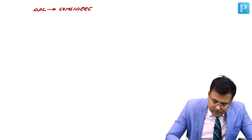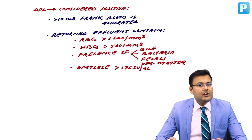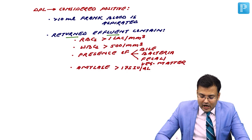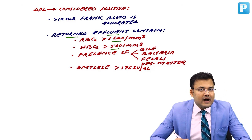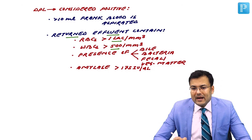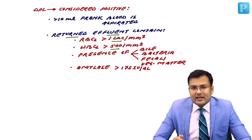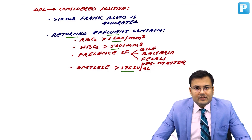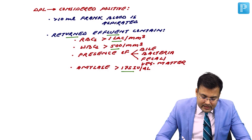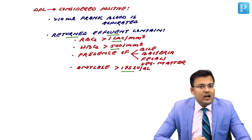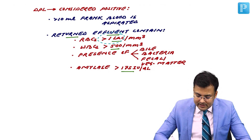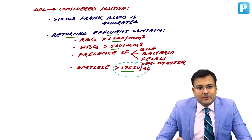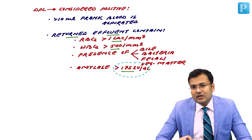To summarize DPL positive criteria: frank blood aspirated more than 10 ml; RBCs more than 1 lakh per mm³; WBCs more than 500 per mm³; presence of bile, bacteria, fecal matter, or vegetable matter suggesting perforation; or amylase more than 175 international units per deciliter. However, FAST has replaced DPL, and FAST is the first investigation done in blunt trauma abdomen patients.